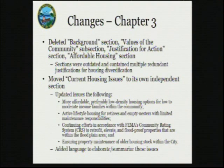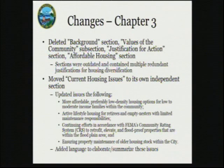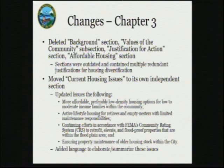As part of this rearrangement, we've deleted the background section, the values of the community subsection, the justification for action subsection, and the affordable housing section — these contained outdated language and redundant justifications for the previous strategy of housing diversification. We've moved the current housing issues section to its own independent area and updated it to reflect four new issues: more affordable, preferably low-density housing options for low to moderate income families; active lifestyle housing for retirees and empty nesters with limited maintenance; continuing efforts in accordance with FEMA's CRS system to retrofit, elevate, and flood-proof properties; and ensuring property maintenance of older housing stock within the city.